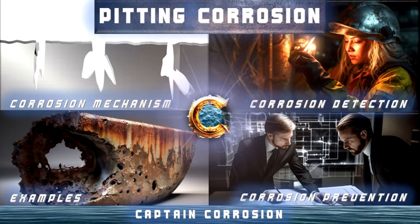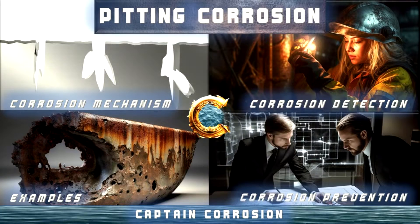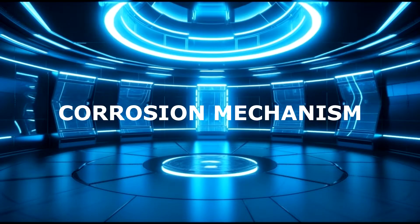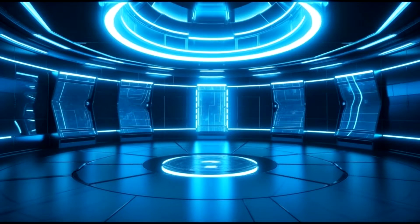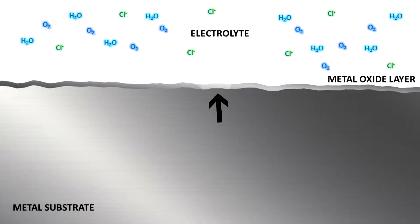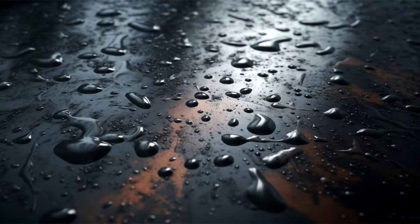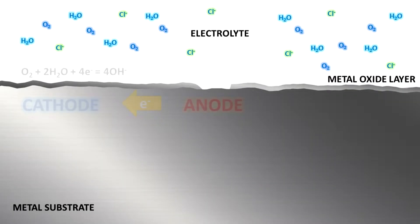We will explore this topic in depth, so let's dive right into it. The mechanism of pitting corrosion is quite complex and progresses in multiple stages. In the first stage, the breakdown of the protective oxide layer on the metal surface initiates pitting corrosion. This can happen due to various factors, including exposure to corrosive substances, mechanical damage, or the presence of impurities on the surface.